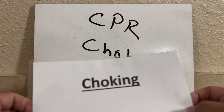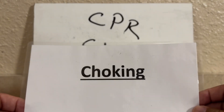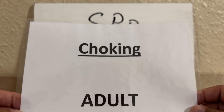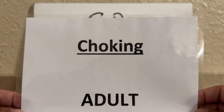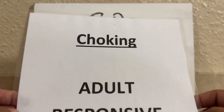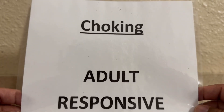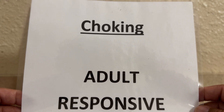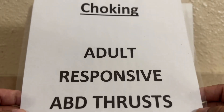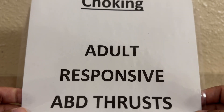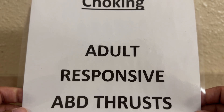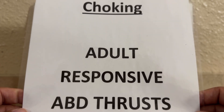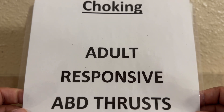So we have a choking situation. This population is an adult patient. If the patient is responsive — not unresponsive, but responsive — the answer is we're going to give abdominal thrust. I'll show you how to perform this skill in the next couple of videos. So for choking: adult, responsive patient — abdominal thrust.